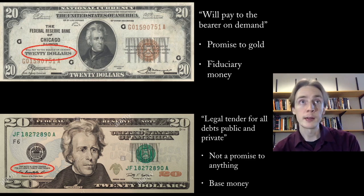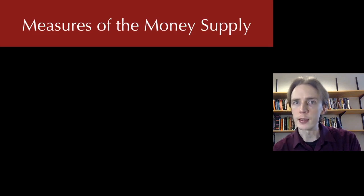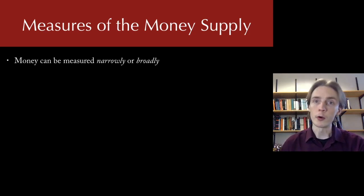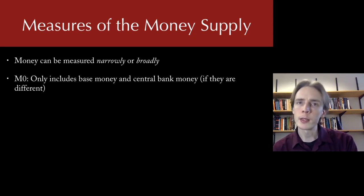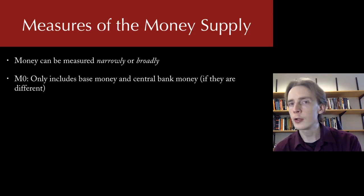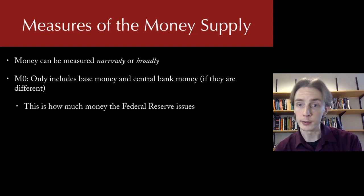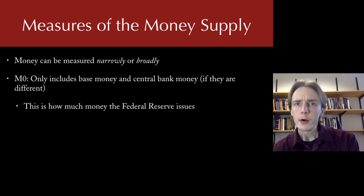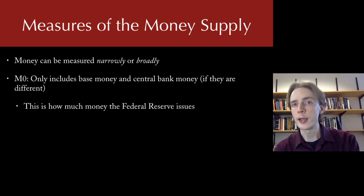Because we have different types of money coexisting in the same economy, we can measure the money supply several different ways depending on what we include — a broad or narrow measure. The first measure is M0, which includes only base money directly issued by the central bank. M0 is under the direct control of the Federal Reserve: the cash in your pocket and bank reserves are part of M0. But M0 is very far from all the money you use.